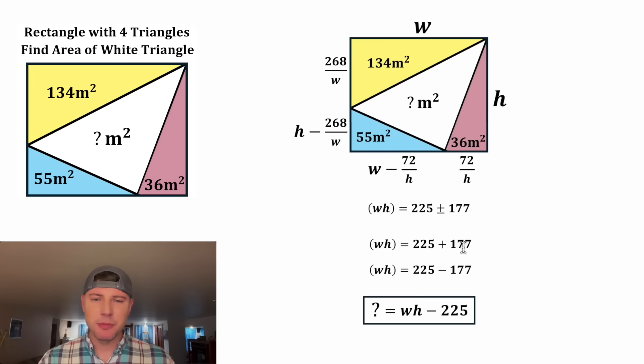For the plus version, this plus this is 402. And for the minus version, this minus this is 48. So this 402 and the 48 are the two possible areas of our rectangle.